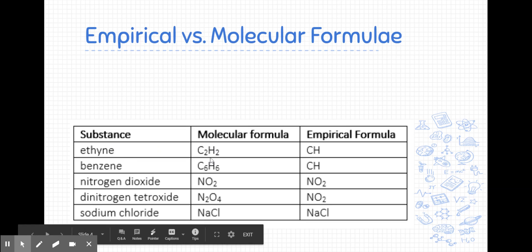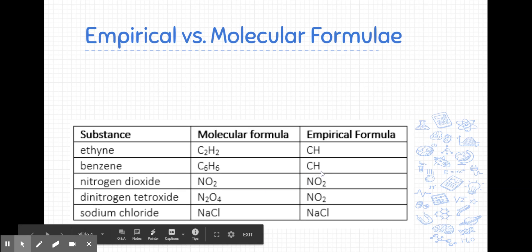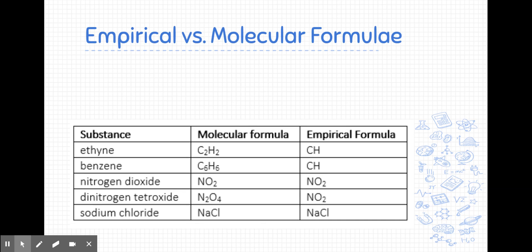So for ethyne, which is C2H2, it's a molecule which contains two carbons and two hydrogens. We can express that same ratio as an empirical formula, in which it would just be CH. Benzene is another covalently bonded molecule with a formula of C6H6. A one-to-one ratio, so its empirical formula is also CH. So multiple compounds can have the same empirical formula, but then they might have different molecular formulas.